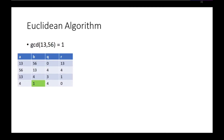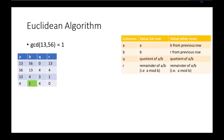In the video about the Euclidean algorithm, we wanted to calculate the GCD of 13 and 56. Using the Euclidean algorithm, we constructed a table and discovered that the GCD of 13 and 56 equals 1. This is an overview of the different columns in the tables we construct using the Euclidean algorithm. As you can see, each table has 4 columns: A, B, Q, and R.